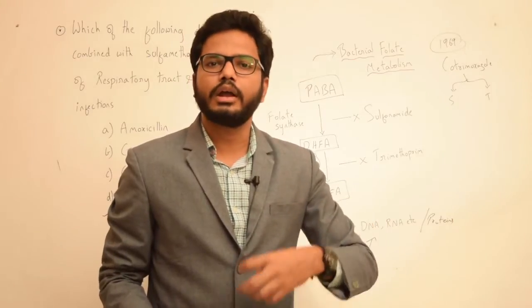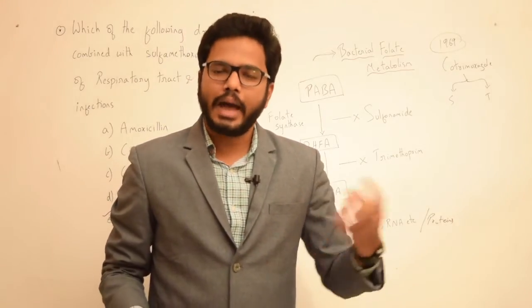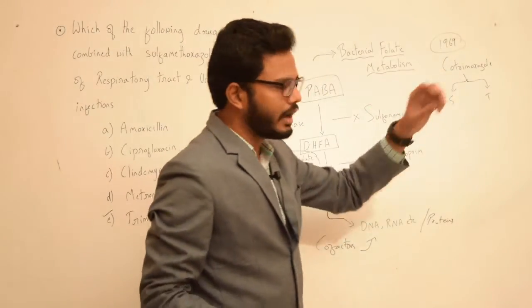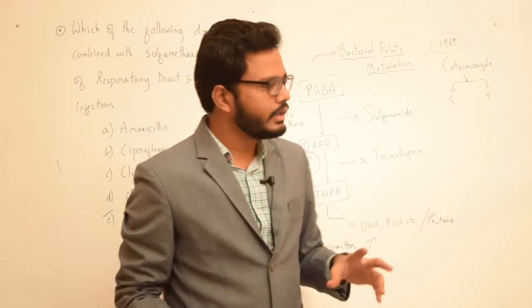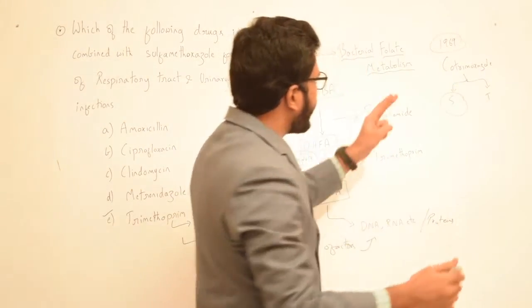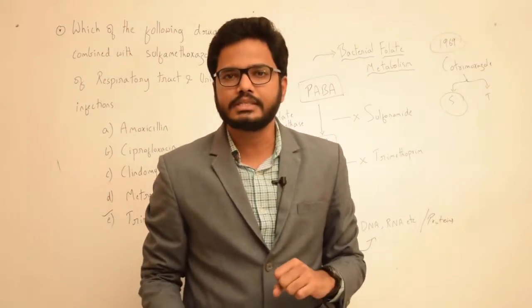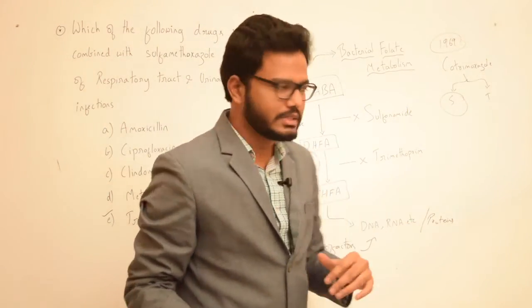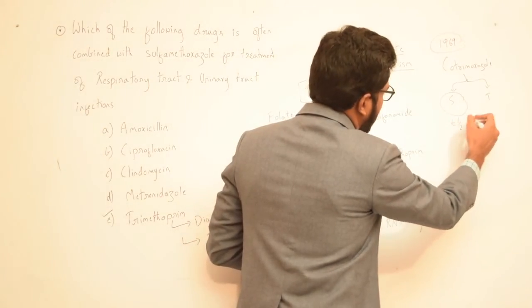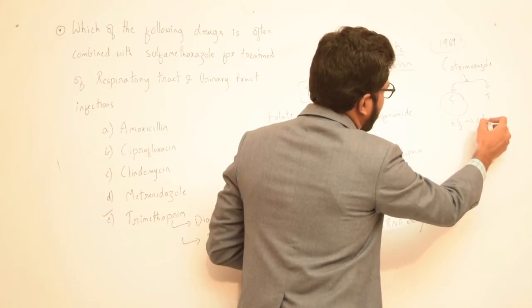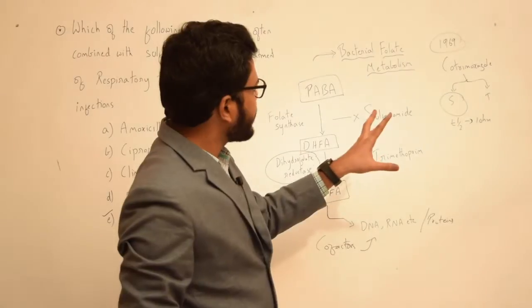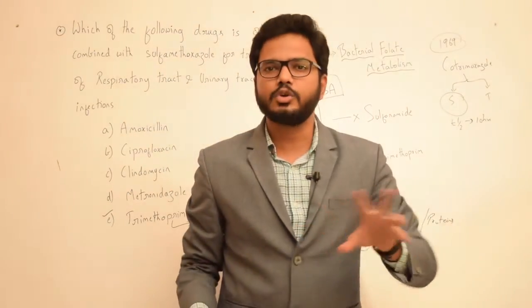As a result, these drugs are more effective against various bacteria which have resistance to one of the combinations, either sulfonamide or trimethoprim. Most importantly, the reason we select sulfamethoxazole in combination with trimethoprim is that the half-life of both drugs is almost the same—approximately 10 hours. These drugs are given in a fixed dose combination.